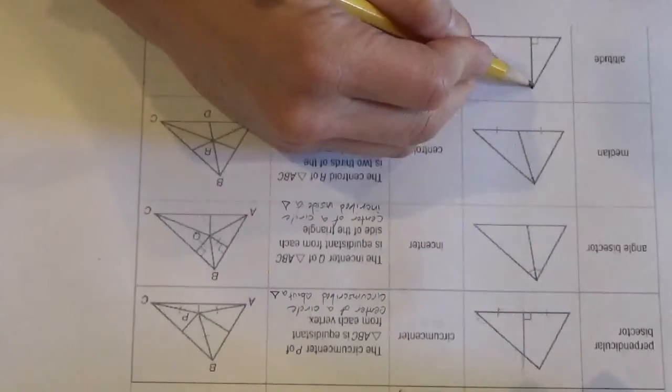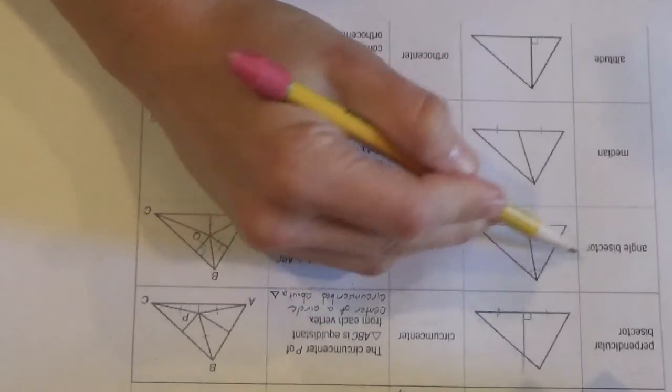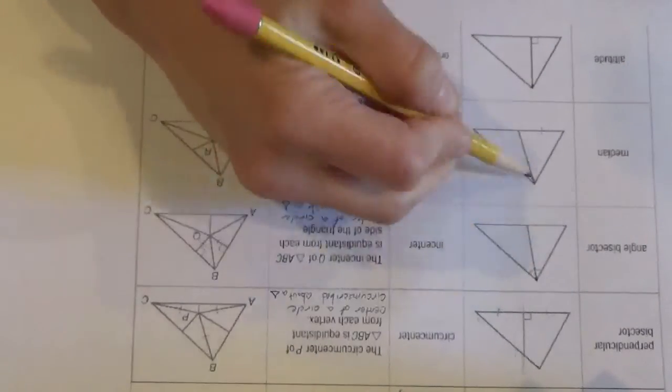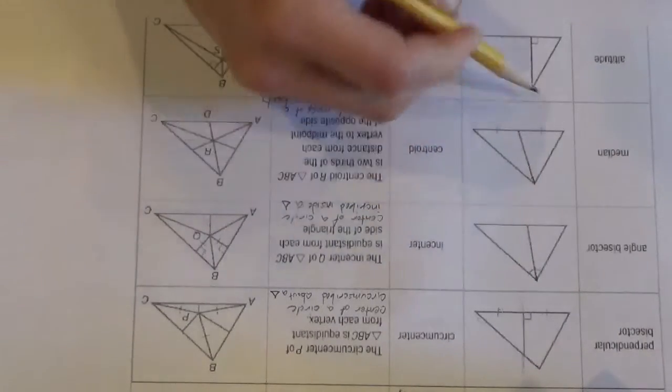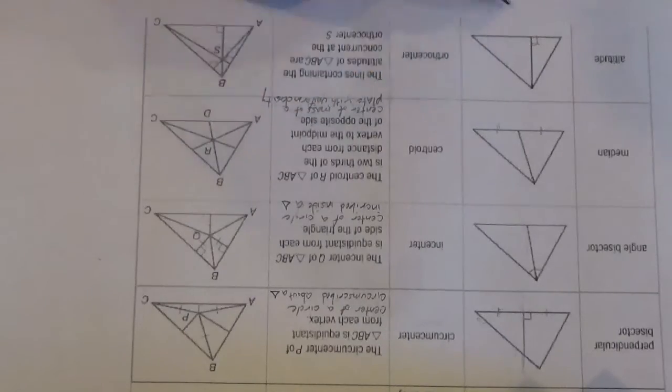the medians, and the altitudes, have to start at a vertex and go to the other side. So an angle bisector starts at a vertex and bisects that angle. A median starts at a vertex and bisects the opposite side. An altitude starts at a vertex and is perpendicular to the opposite side.